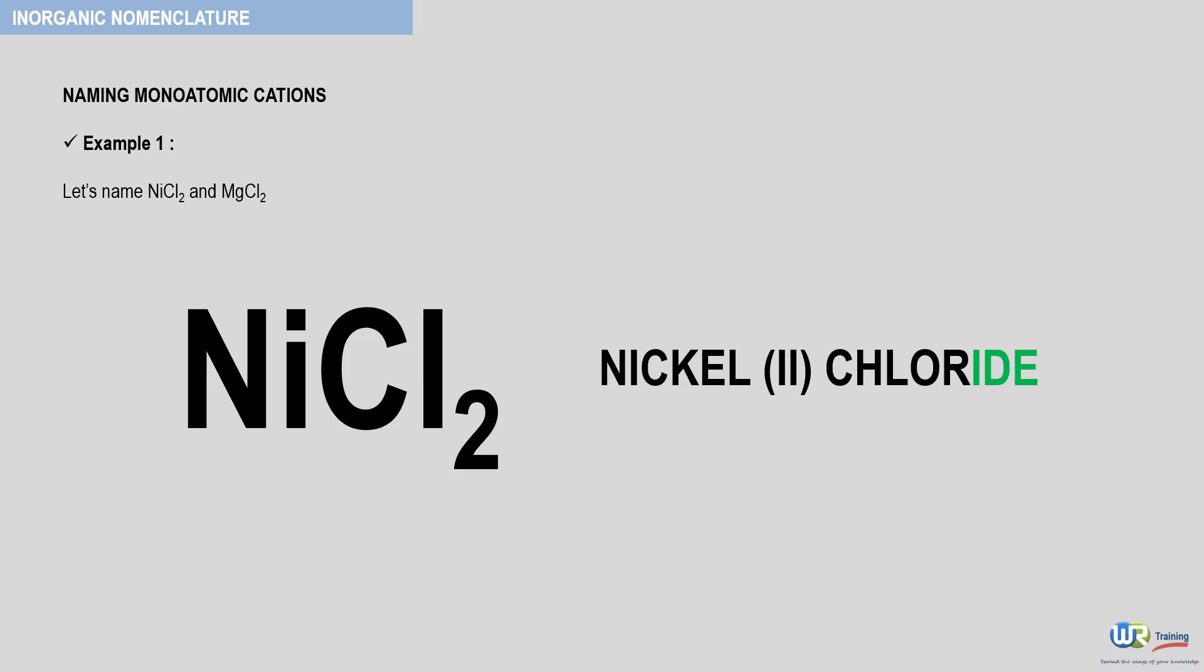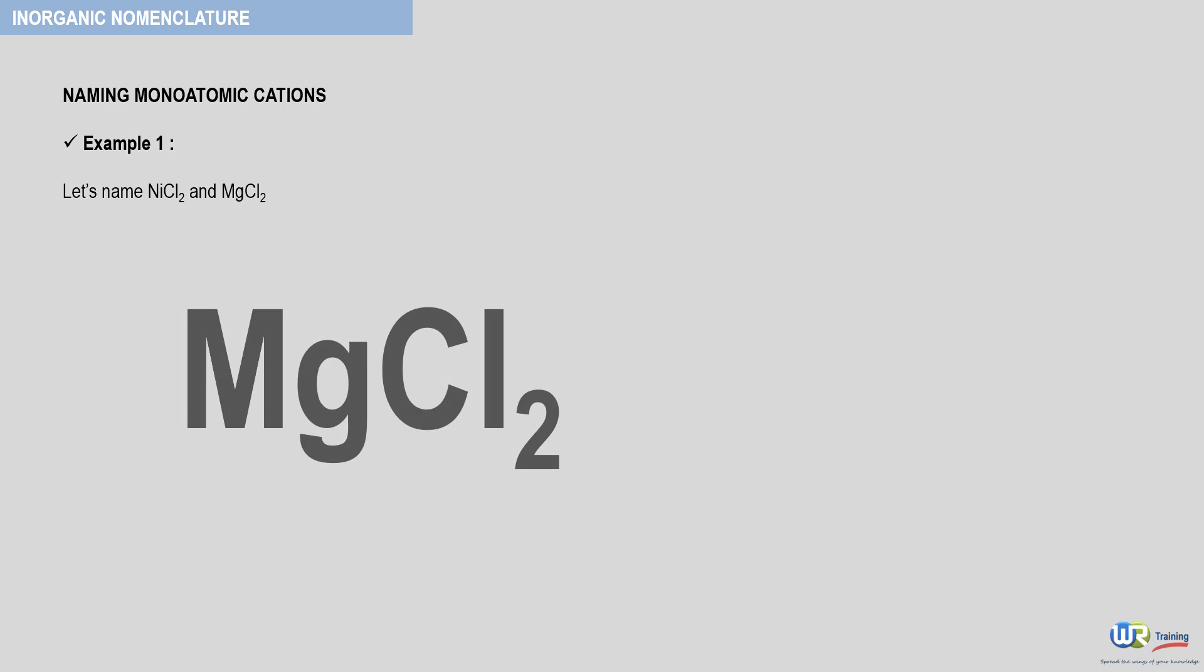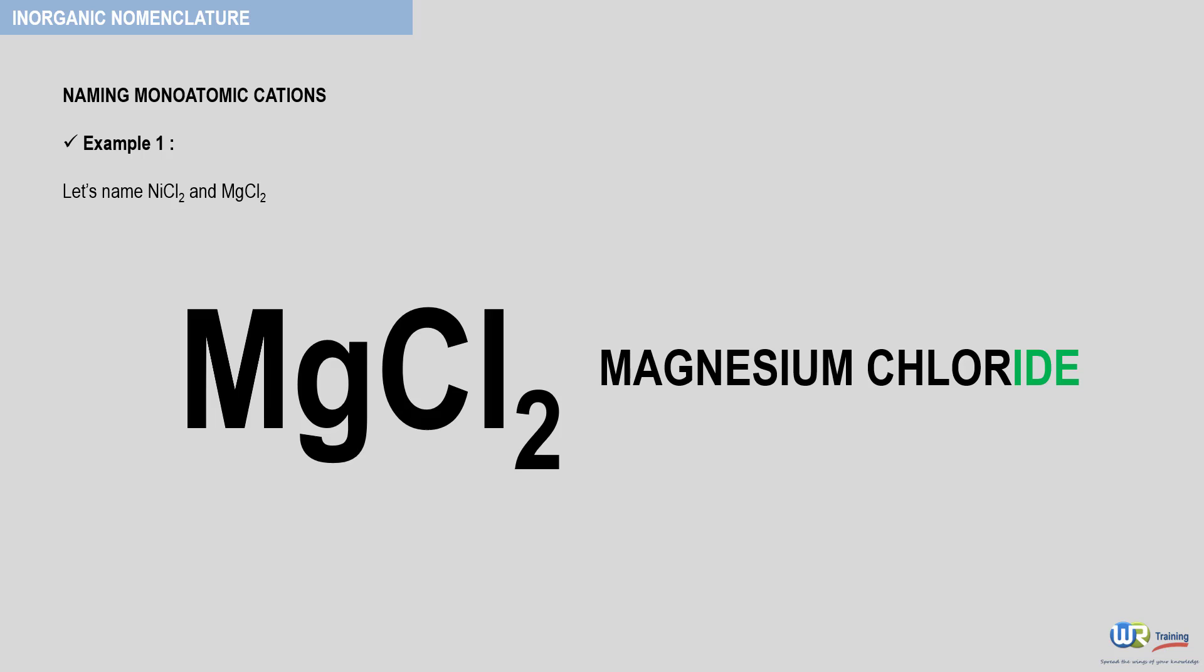And since magnesium is an alkaline earth element, the charge in its compounds is always plus 2. So there is no need to mention the charge in the name. And the name corresponding to this compound, MgCl2, is magnesium chloride.